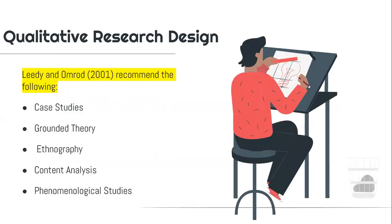What are the qualitative research designs? According to Lidin and Onbrad, 2001, they have recommended five: case studies, grounded theory, ethnography, content analysis, and phenomenological studies. These are the things that we have to learn today, for these are your qualitative research designs.